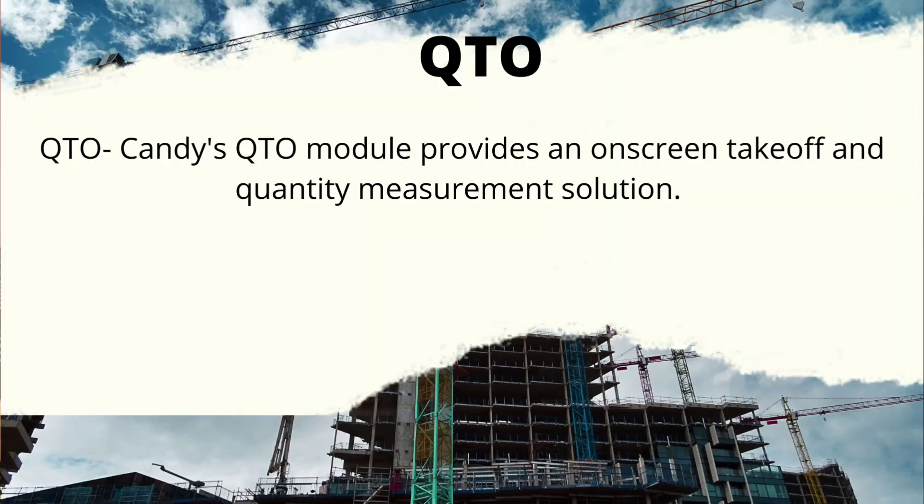Next is QTO. QTO is actually linked to Candy, which is the first software I started with. Candy QTO stands for Quantity Take Off, and it provides an on-screen takeoff and quantity measurement solution — similar to DimX. It is an on-screen measuring tool where you can link it to your BOQ and measure directly onto it. As soon as you have Candy, you have free access to QTO where you upload your drawings, measure from them, and link it to your BOQ to make it a wholesome system. There are some limitations — for example, not everyone can measure the same drawing at the same time, whereas with DimX multiple people can measure the same drawing simultaneously.